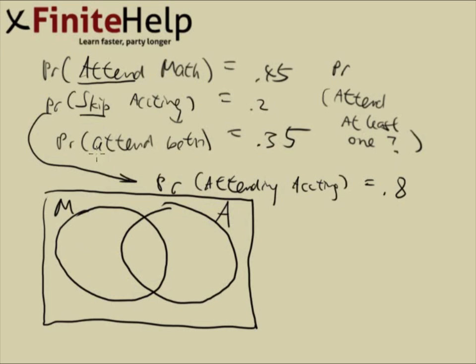The probability of attend both is 0.35. That's the information we can use immediately. That would be the intersection. Here attending accounting is 0.8, and we subtract 0.35 from the middle, we get 0.45.